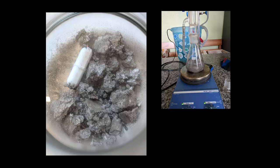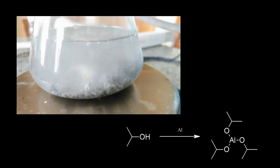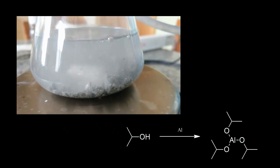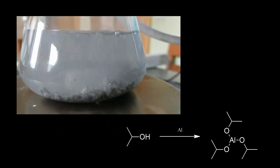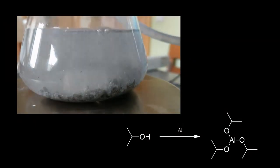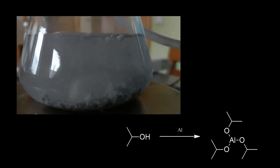Actually, NurdRage did a video about aluminum isopropoxide, except that he activated the aluminum with mercuric chloride, and so we can use our activated aluminum instead. I've provided a link to NurdRage's video in the video description.